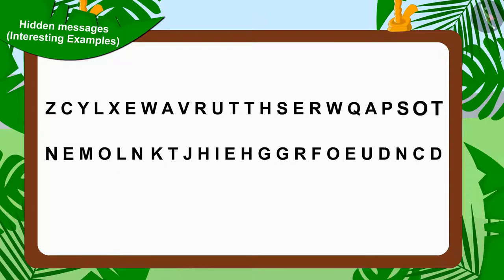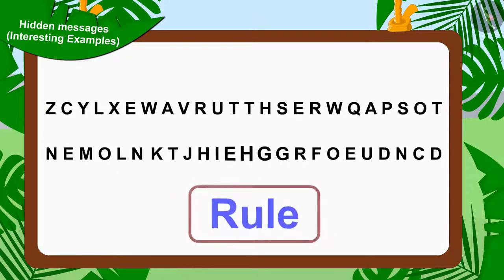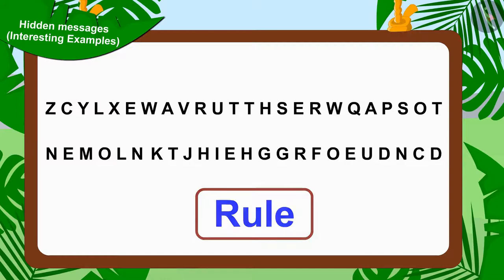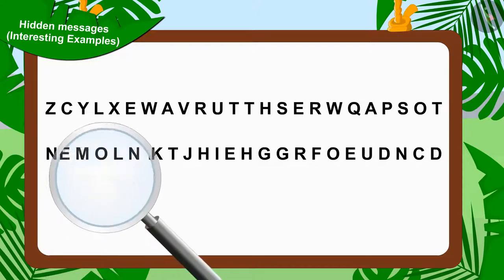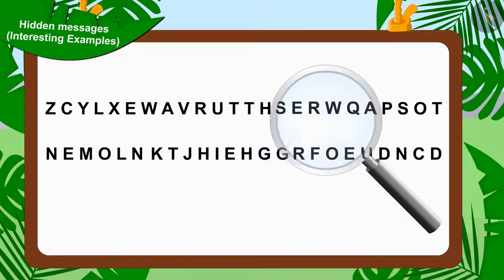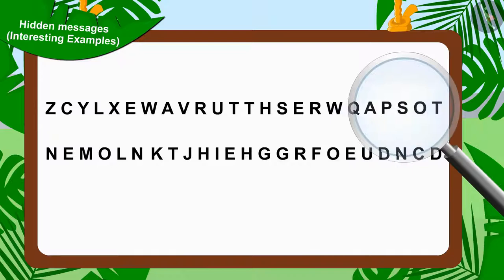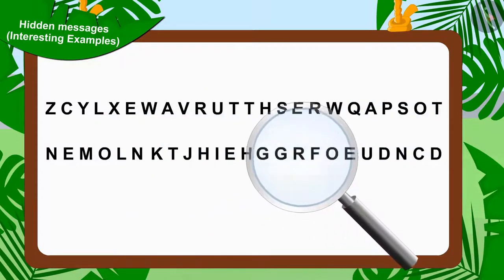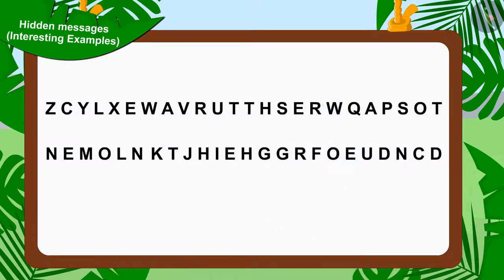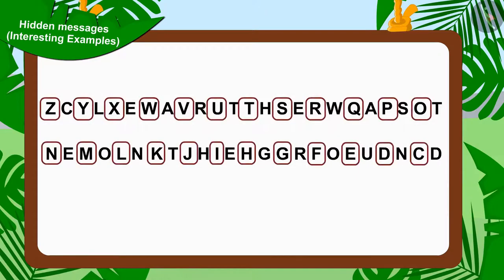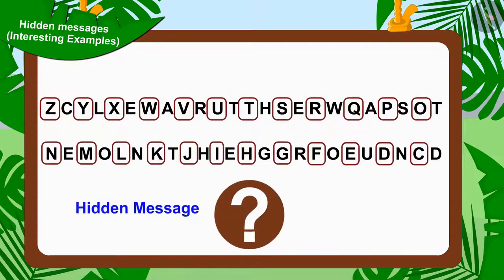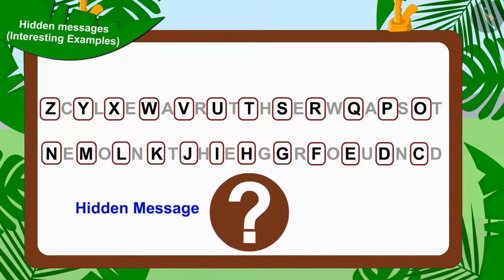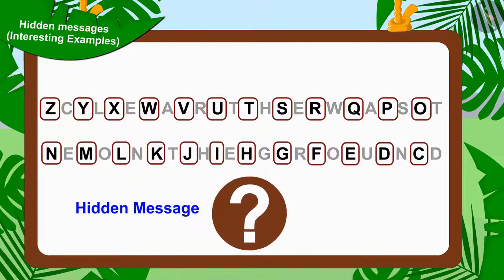Let us first find the rule in these alphabets. If we look closely, we will find that the alphabets here are written in reverse order. But do you understand any hidden message from these alphabets?